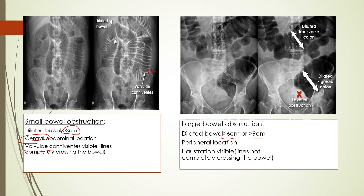The large bowel obstruction is generally peripheral in location. It has haustra lines visible. These lines do not completely cross the bowel, as we can see over here. This is the site of obstruction, and there is the loop of sigmoid colon that is dilated.